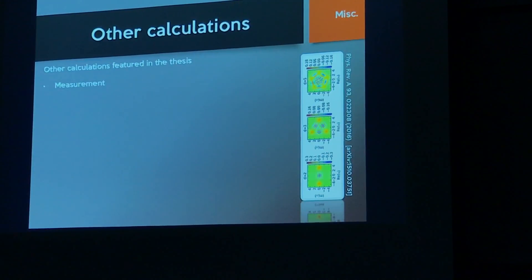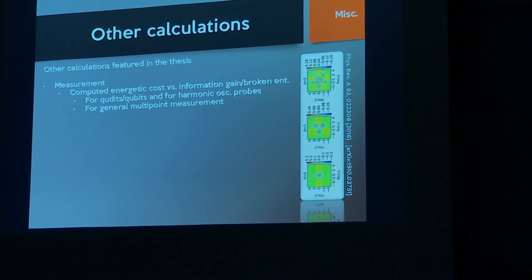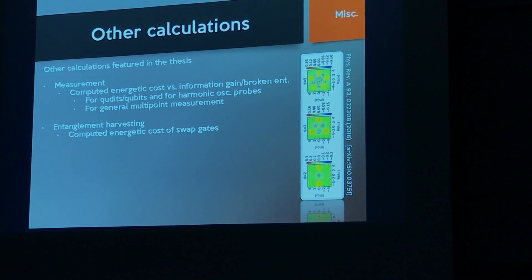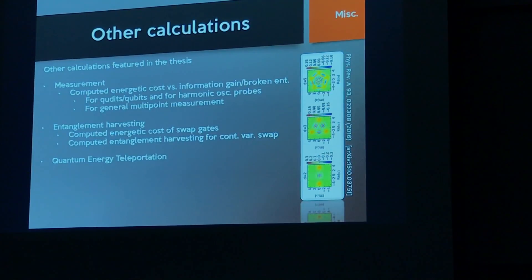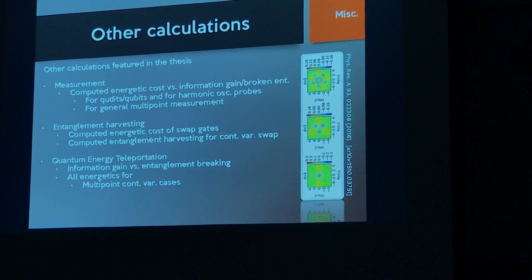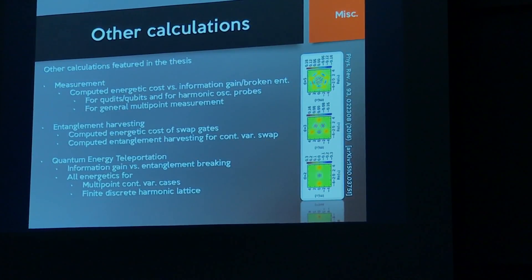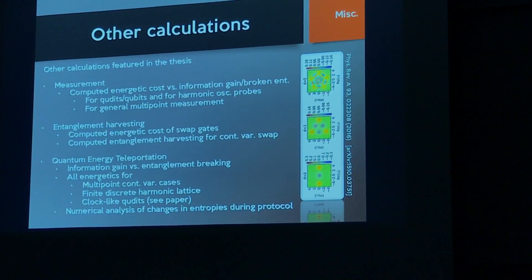A summary of other calculations: for multipoint measurements, computed energetic costs, information gain, broken entanglement, qubits and harmonic oscillators. For general multipoint measurement, did entanglement harvesting and calculated energetic cost of swap gates. For quantum energy teleportation: information gain versus entanglement breaking for measurements, all the energetics for the multipoint continuous variable case, the finite discrete harmonic lattice in collaboration with Jason, numerical analysis, and for clock-like qubits in a paper with Edu and Akeem.